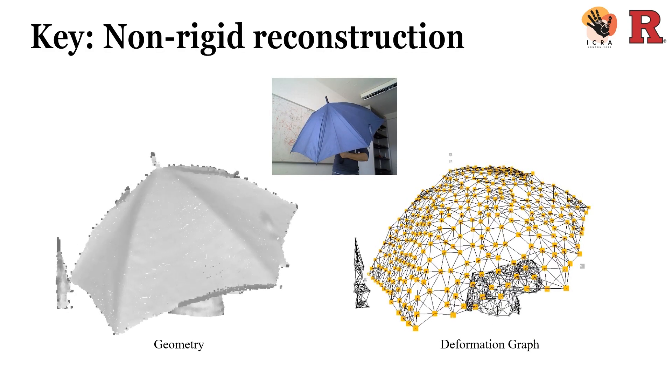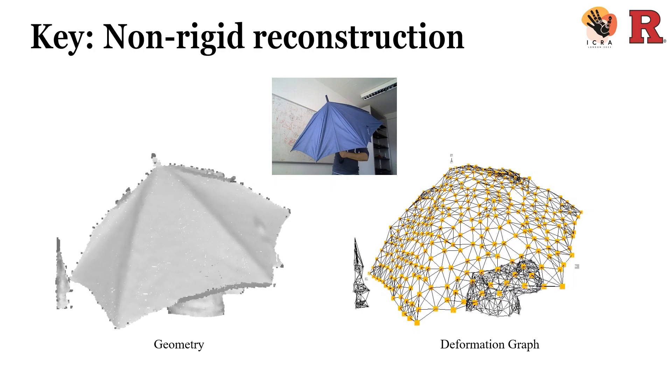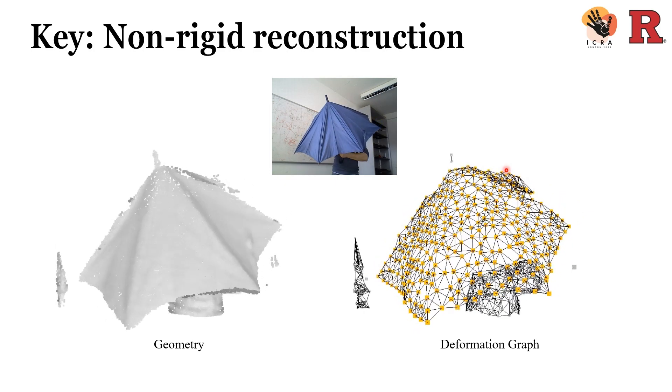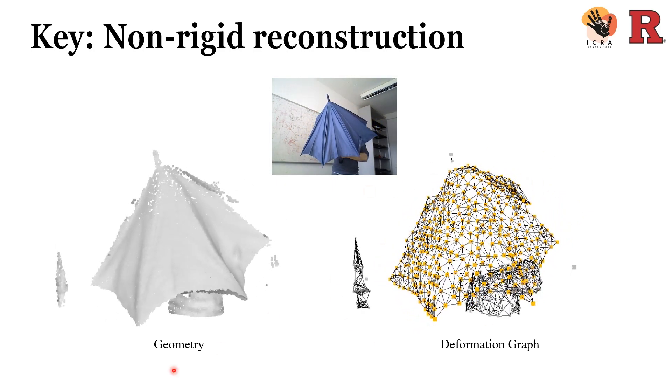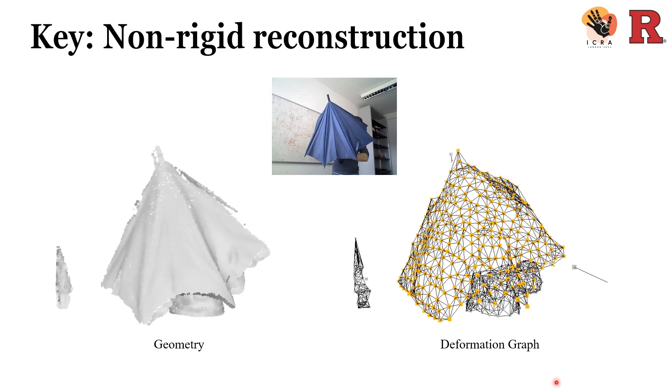The key technique behind Monostar is non-rigid reconstruction. As shown on the right side, we use a spatial graph to represent the deformation. Each node on this deformation graph represents a local rigid transformation. You can regard this deformation graph as a skeleton and the reconstructed geometry as skin. The skin will be moving along with the skeleton.